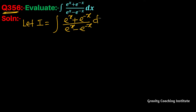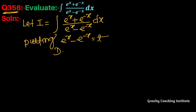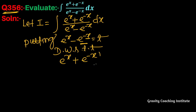Now differentiate with respect to t: the differentiation of e to the power x is e to the power x, and the differentiation of e to the power minus x is e to the power minus x. With the minus sign it becomes minus, so minus minus gives plus, making dt equal to 1. Therefore I equals the integration of 1/t dt.